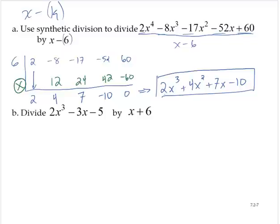Let's see another example. Divide 2x to the third minus 3x minus 5 by x plus 6. So we have to have the form x minus k in the divisor. x plus 6 is the same as x minus negative 6.